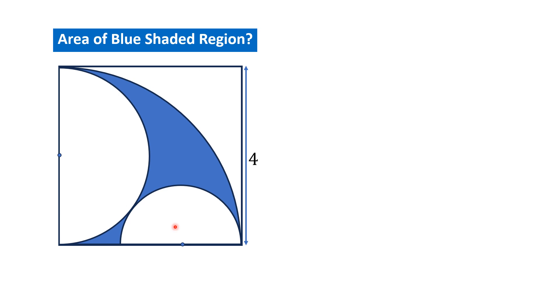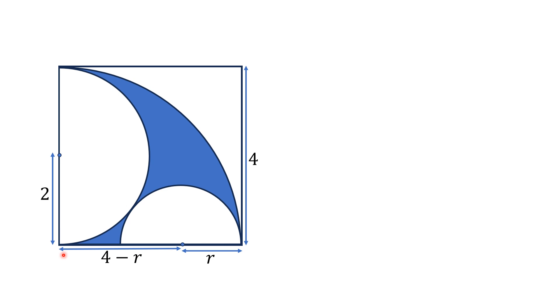The radius of this semicircle is two units, and let's call the radius of this semicircle r. Then this length is equal to 4 minus r.